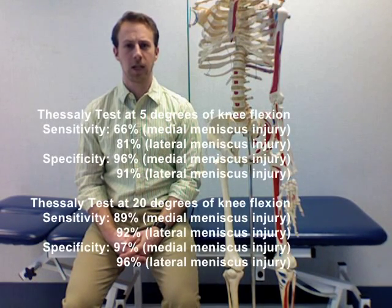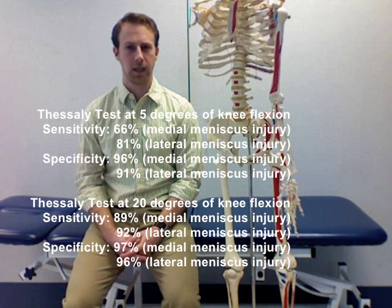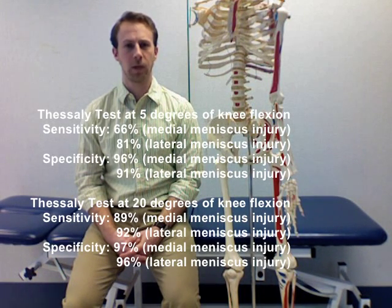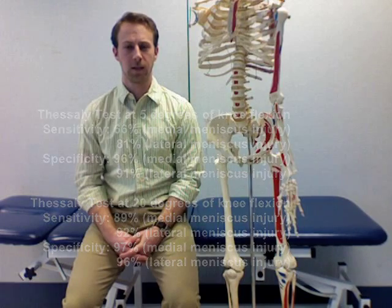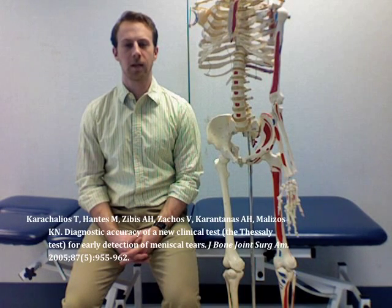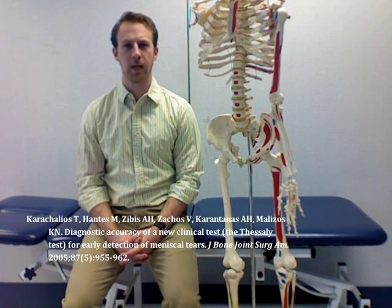Current literature suggests that psychometrics for these exams are excellent at detecting medial and lateral meniscal tears, especially when the knee is flexed to 20 degrees. The Thessaly test also has a low false positive and false negative rate. The test is up to 96% accurate in identifying meniscal injury, which was then confirmed by MRI. These psychometrics hold up even when a meniscal tear is combined with an ACL injury.